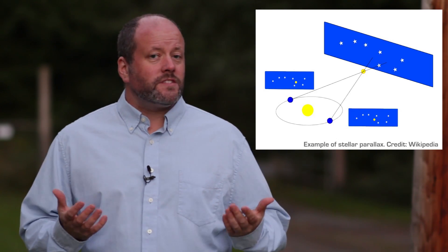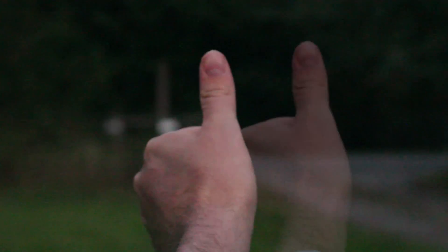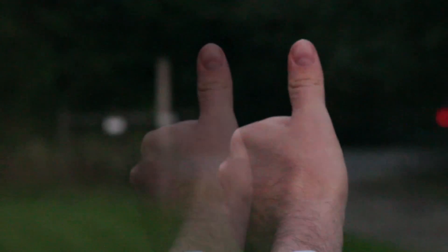Consider how the Earth travels around the Sun in its orbit. At one point in the year it's on one side of the Sun, and then six months later the Earth has traveled to the opposite point in its orbit. From our perspective here on Earth, a nearby star will appear to move back and forth a tiny little bit against the background Universe. You can get this same effect by holding up your thumb, staring down your arm, and then opening and closing your eyes. See how your thumb is moving back and forth compared to the background scenery? This is known as parallax, when a foreground object moves compared to a more distant background.